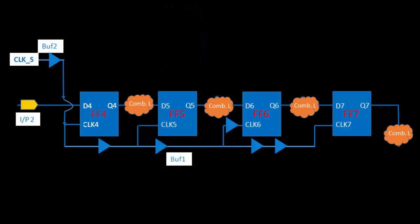Let's start with flip-flop 5 and flip-flop 6. Suppose there is a hold violation within this path — timing path Q5 to Q6. You want to fix that hold violation using the skew only, meaning you want to touch the clock network. As discussed in the previous lecture, there is a relationship between hold and skew. If you increase the skew, there are chances of hold violation. So to fix the hold violation, you simply decrease the skew on this path.